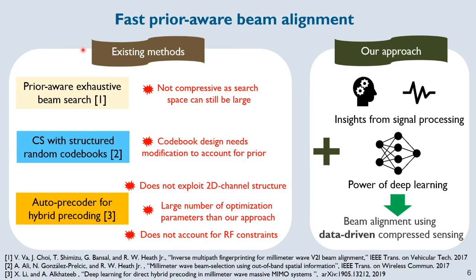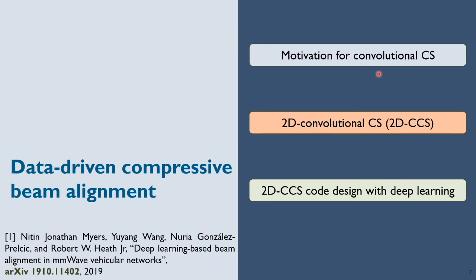Prior work has looked at this problem from three distinct directions. It is either through modifying exhaustive beam search or by using structured random codebooks in compressed sensing or through deep learning. Although these techniques are useful over their structure agnostic counterparts, they suffer from limitations. Today, I am going to talk about a technique which uses insights from signal processing together with deep learning for faster beam alignment.